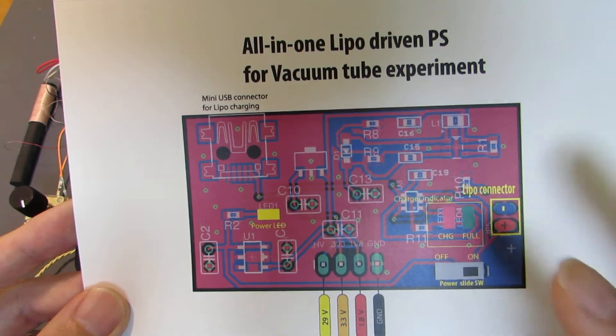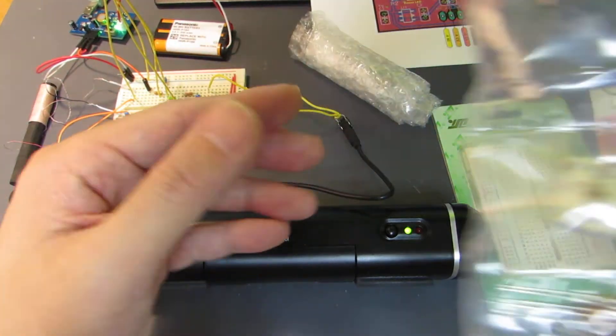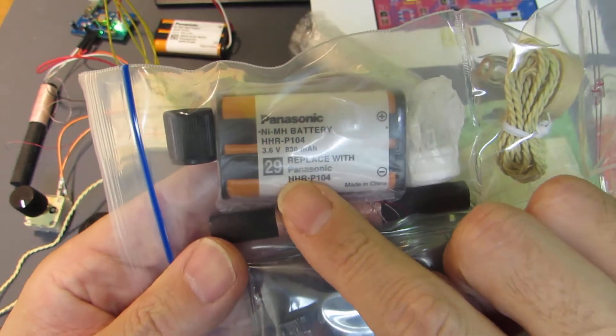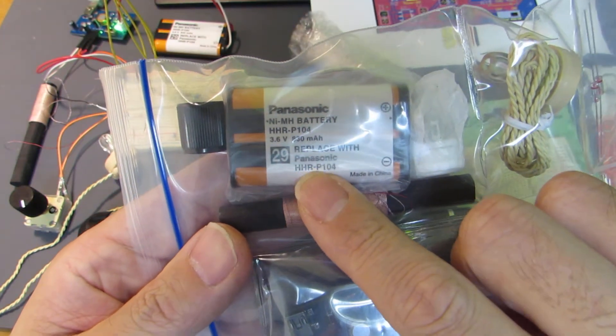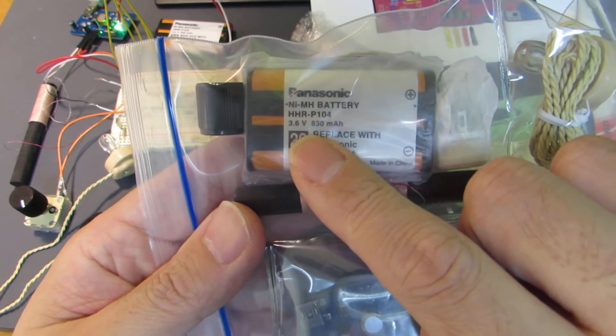This board is included in this kit. And here is the parts kit. You see, this is a battery. It's not lithium polymer, it's an NIMH made by Panasonic, and the voltage is 3.6.